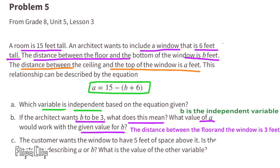The value for A depends on what 15 minus B plus 6 is, so A is the dependent variable and B is the independent variable. Part b: If the architect wants B to be 3, what does this mean? That means the distance between the floor and the window is 3 feet. A equals 15 minus 3 plus 6, and 3 plus 6 is 9, so 15 minus 9 equals 6. A equals 6.